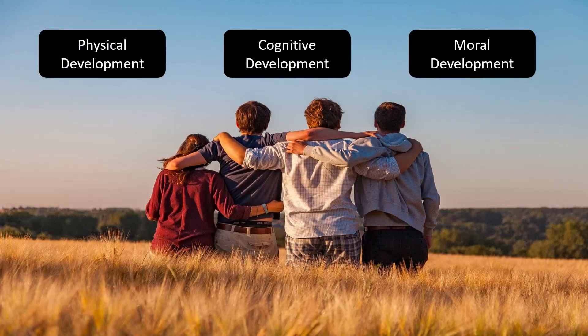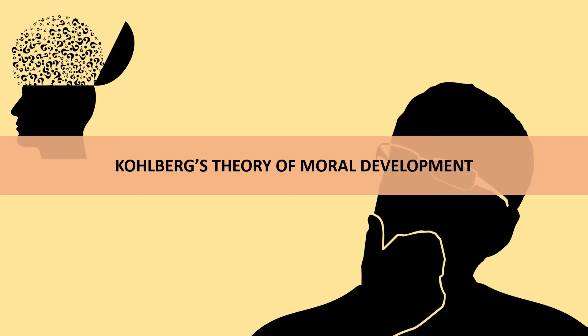Welcome. We are discussing the dimensions of adolescent development. We have covered physical development, cognitive development, and now we are focusing upon the moral development of adolescence. When discussing moral development, there comes the importance of Kohlberg's theory of moral development. Let us see in detail about this theory.